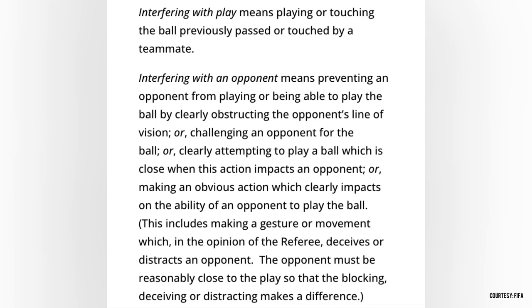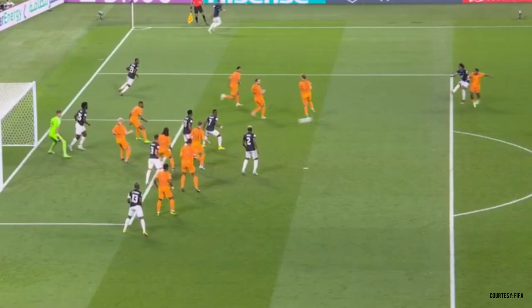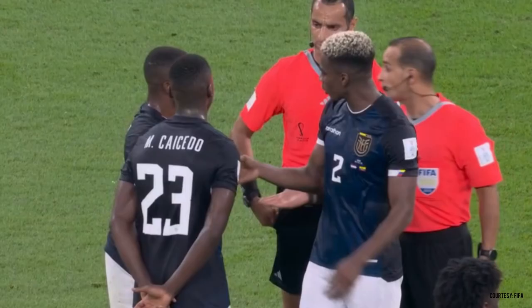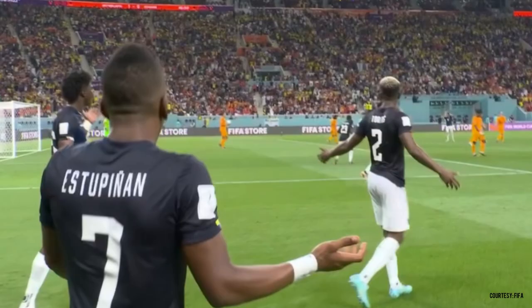Do you guys think the Ecuadorian player who was in an offside position blocked the Netherlands goalkeeper's view? Or do you think that the Netherlands goalkeeper could see just fine despite the Ecuadorian attacker being where he was? Comment what you think down below. I personally feel that the Ecuadorian player was right in front of the Holland goalkeeper — however, it was a pretty tough call to make.